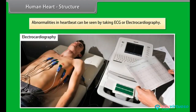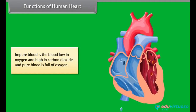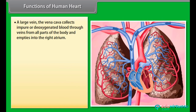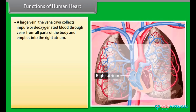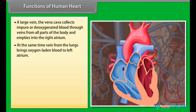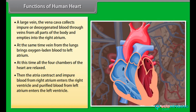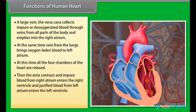Abnormalities in heartbeat can be detected by taking an ECG, or electrocardiography. Impure blood is blood low in oxygen and high in carbon dioxide, while pure blood is full of oxygen. A large vein, the vena cava, collects impure or deoxygenated blood from all parts of the body and empties into the right atrium. At the same time, a vein from the lungs brings oxygen-laden blood to the left atrium. Then the atria contract: impure blood from the right atrium enters the right ventricle, and purified blood from the left atrium enters the left ventricle. Valves within the heart prevent blood from flowing back.